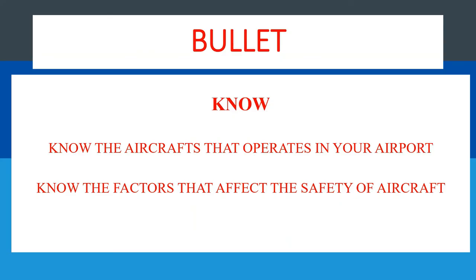The bullet for today is: know the aircraft that operate in your airport. Know the factors that affect their safety, know their types, know their characteristics, know their outer main gear wheel span, and compare those with the facilities provided to determine whether they are capable of safely operating such aircraft at your airport.